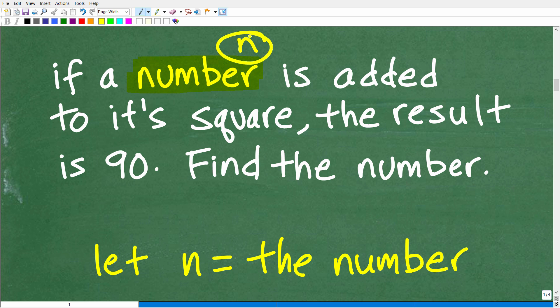If a number N is added to its square. What is the square of a number? If I say two squared, what is the square of two? Does that mean take it to the second power? Indeed, that's exactly what it means to square something. We're going to take it to the second power.